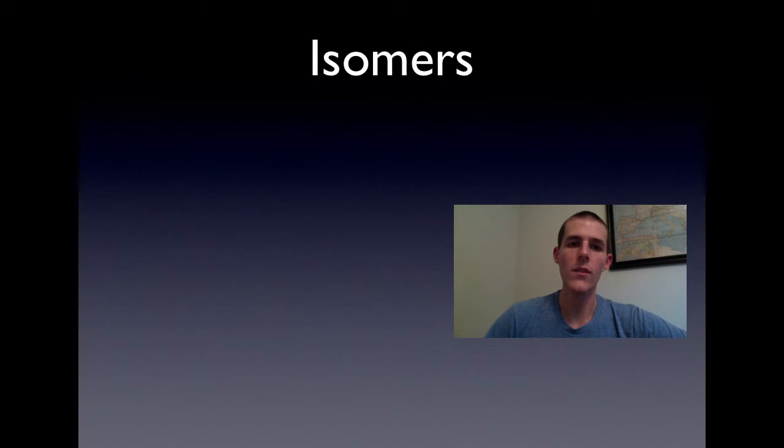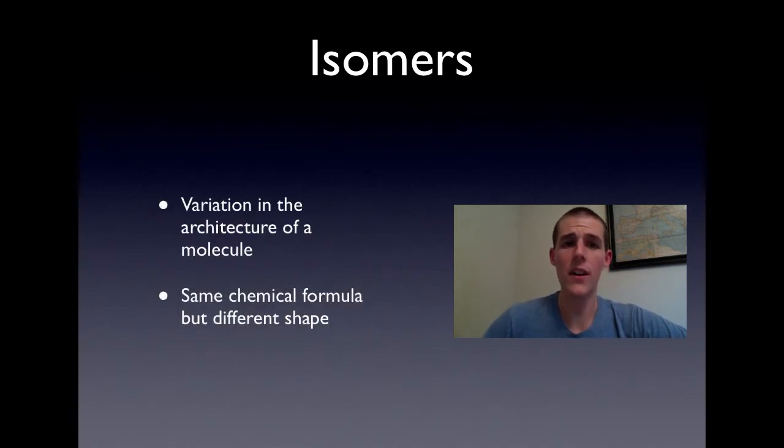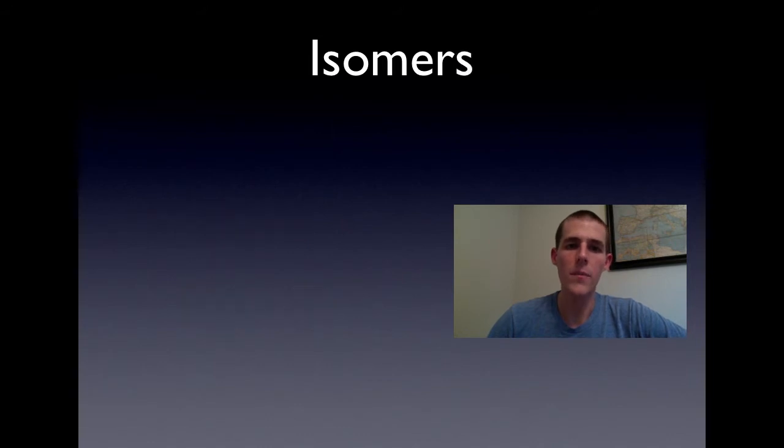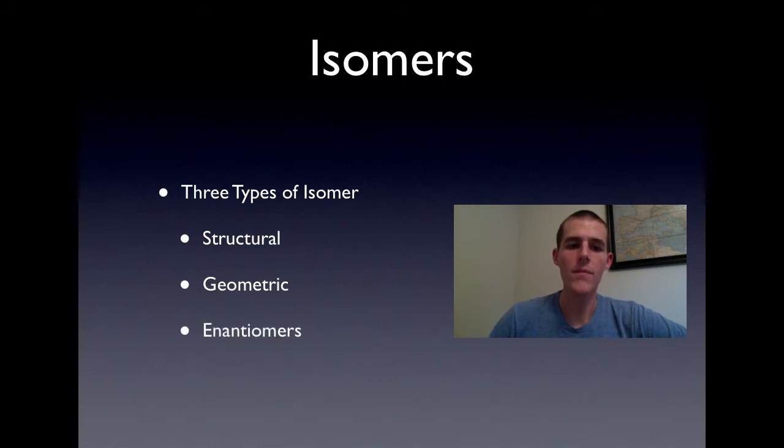We're going to get on into the crux of our discussion today, which is about isomers. Isomers are something that you're going to talk a lot about when you do get to that organic chemistry class. Essentially, they're a variation in the architecture of a molecule. This means that you could have two molecules with the exact same chemical formula, but they could be shaped completely differently, which means that they're also probably going to have different chemical properties. There are three different types of isomers: structural isomers, geometric isomers, and enantiomers.